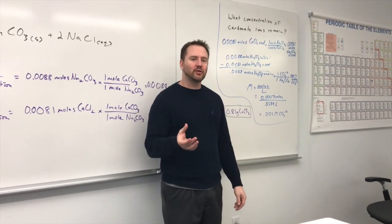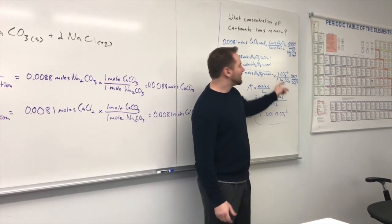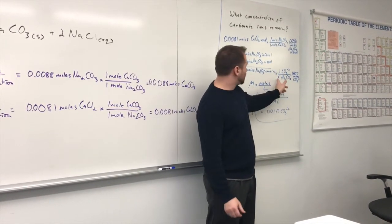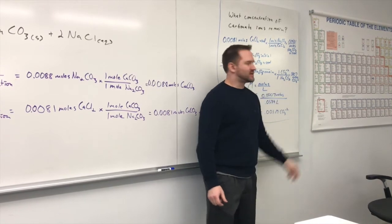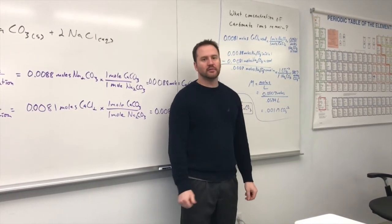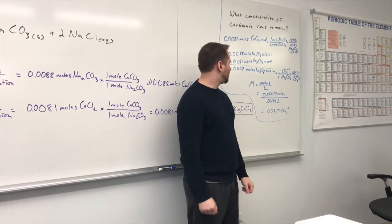Now, since we're looking for a particular ion, we would have to then take this additional step of saying, you have one carbonate ion for every formula unit of sodium carbonate. And we still, because it's a one-to-one ratio, have 0.0007 moles of carbonate ions.